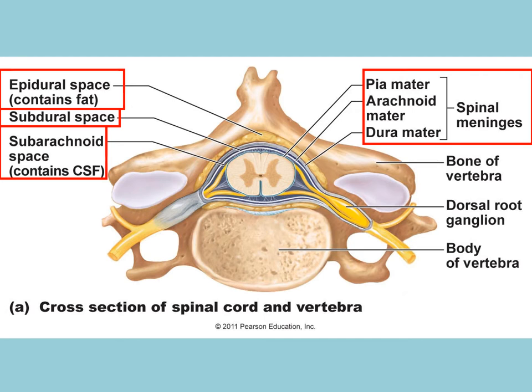When a spinal tap is needed, the needle is inserted into the subarachnoid space to obtain the cerebrospinal fluid. As listed, the spinal meninges from most superficial to deepest are: the dura mater, the arachnoid mater, and then the pia mater, which connects directly to the spinal cord. You can also see the spinal nerve extending out from the spinal cord and attaching to it.